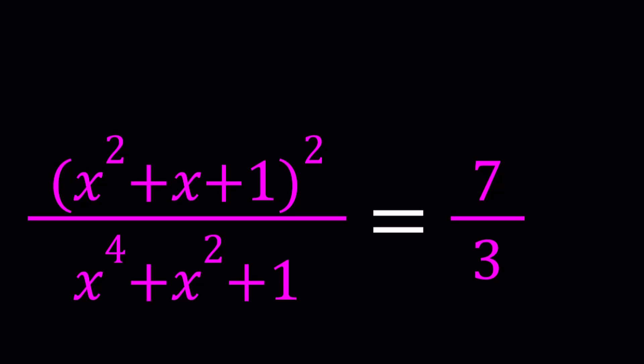Hello everyone. In this video we're going to be solving a rational equation. We have x squared plus x plus 1 squared divided by x to the 4th plus x squared plus 1, and that's equal to 7 thirds. We're going to be solving for x values and let's see how we can solve this in different ways.